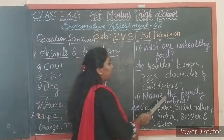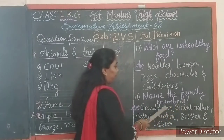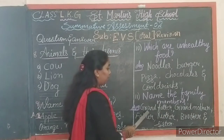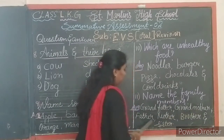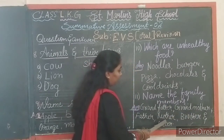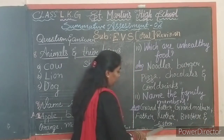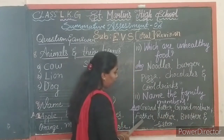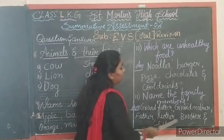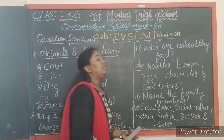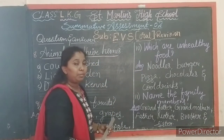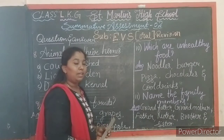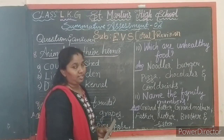Next question: name the family members. Answer — grandfather, grandmother, father, mother, brother and sister. Say once again children — grandfather, grandmother, father, mother, brother and sister. Now tell me children, name the family members. Yes — grandfather, grandmother, father, mother, brother and sister.